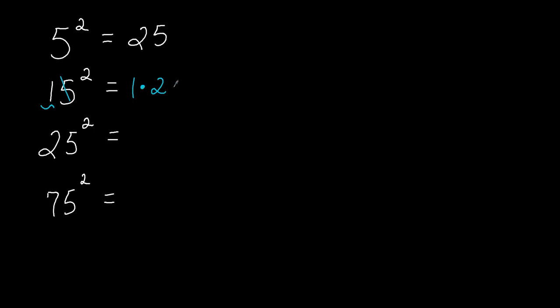We multiply the 1 and the 2 together. 1 times 2 is 2. And then tack a 25 at the end of this. And there you go. 15 squared equals 225.